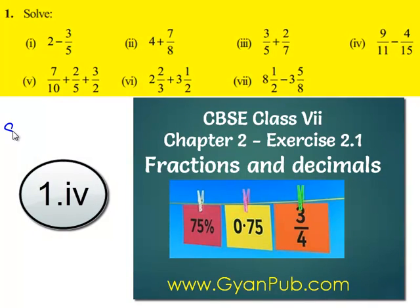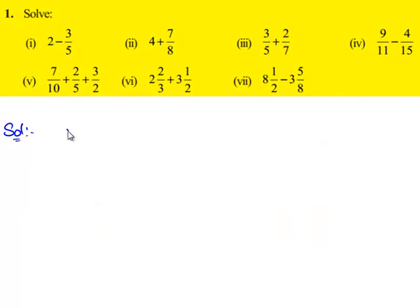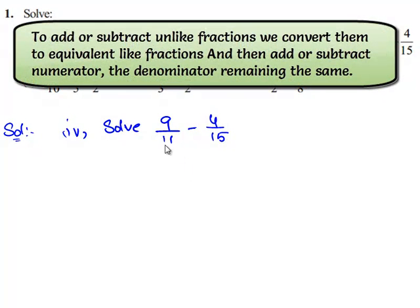Now let us move on to the fourth part of the question. We need to solve 9/11 minus 4/15. Here we need to subtract two fractions which have different denominators. To subtract fractions with different denominators, we need to obtain a common denominator.